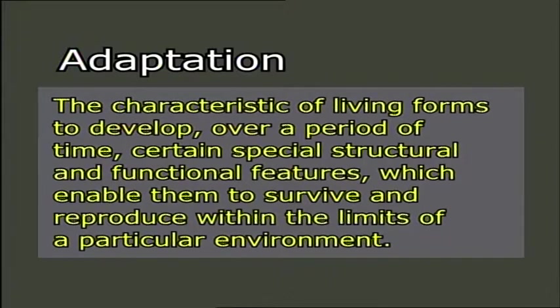These features enable organisms to survive and reproduce within the limits of a particular environment. Adaptation is considered as a process rather than a physical part of the body. It is the evolutionary process that results from natural selection, whereby an organism becomes better fitted to live and multiply in its habitat. All adaptations help organisms to survive in their ecological niche.